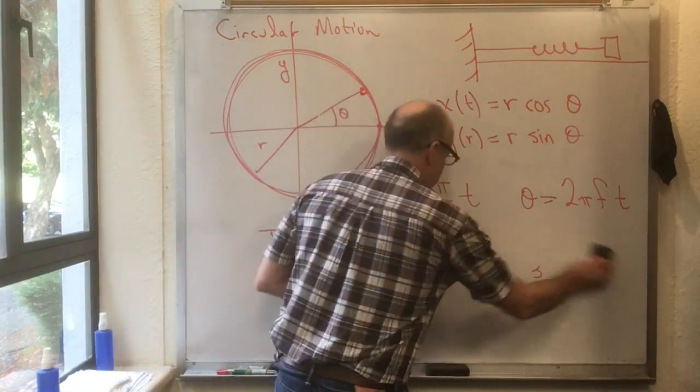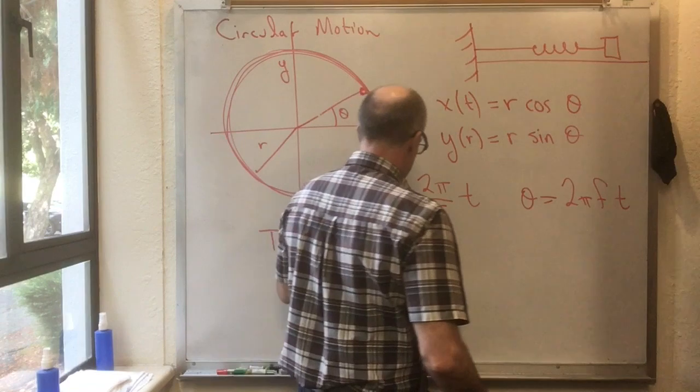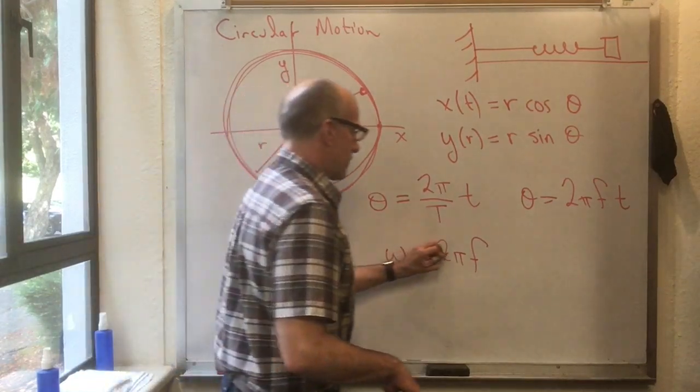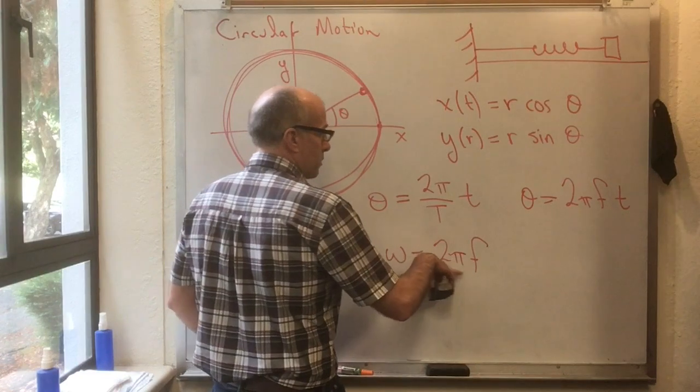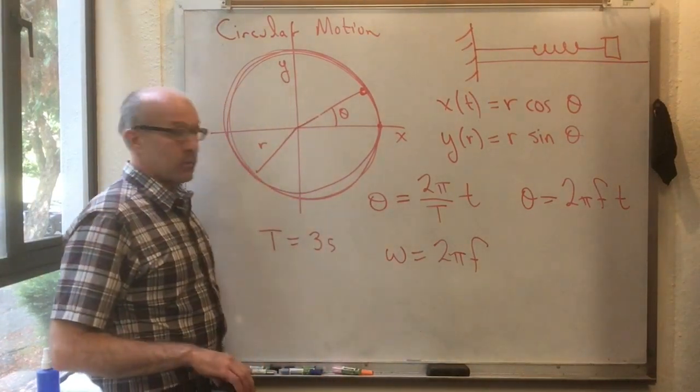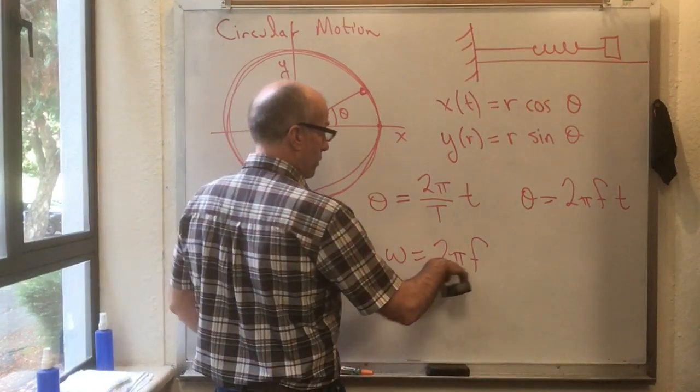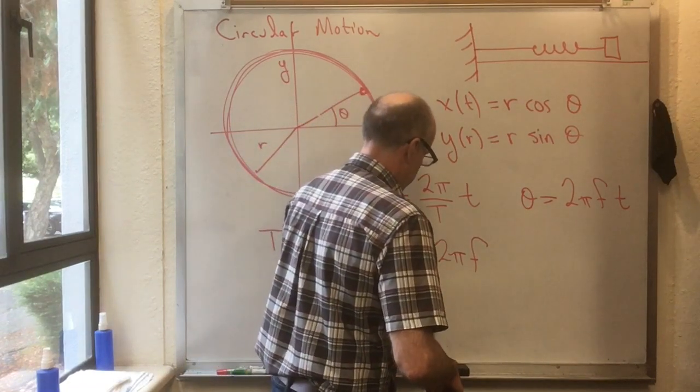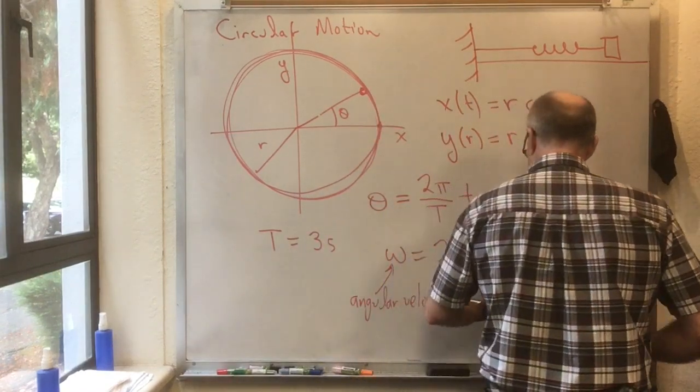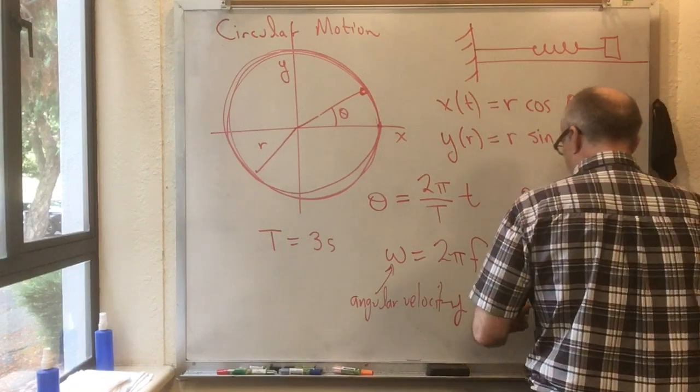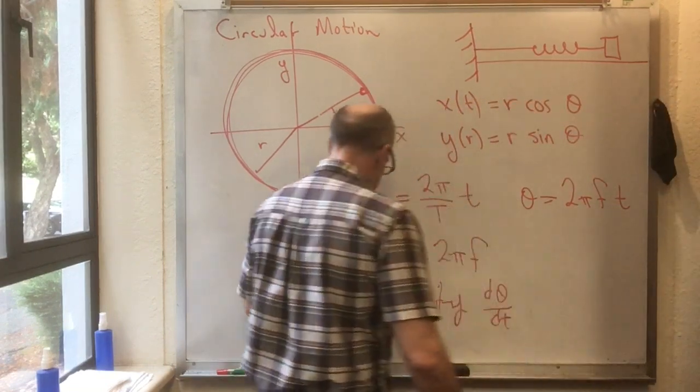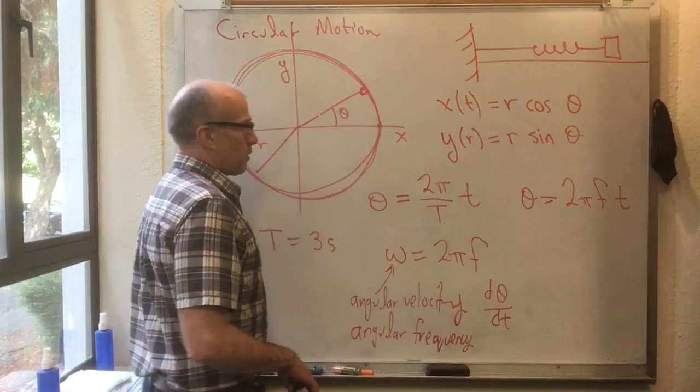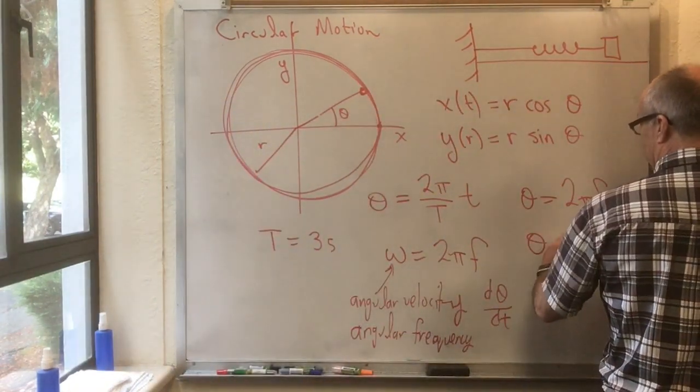Now another way to write it would be to say 2 pi f, that's a combo that comes up a lot. We call that omega. Is that the same omega that we've always been calling omega? Yes, because when you go around one revolution, this 2 pi here takes care of the fact that 2 pi radians have been swept out. So if I say omega is 2 pi f, that is what we've been calling the angular velocity, d theta dt, which is also called the angular frequency.